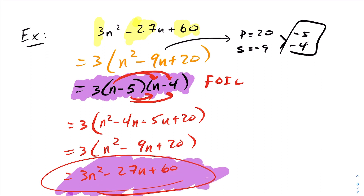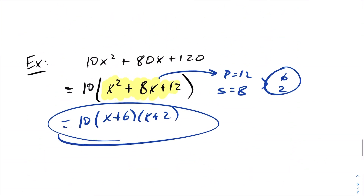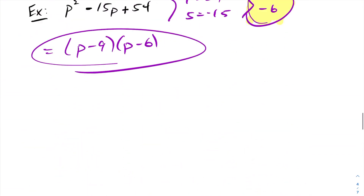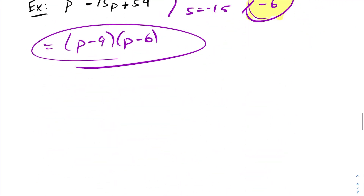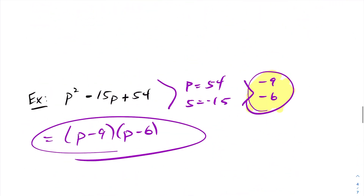This concludes factoring simple trinomials. Feel free to go back, rewatch the video, and try the questions yourself. The basic idea: given a question, look to see if there's a GCF you can factor out first. If not, and the leading coefficient is 1, you do the product-sum method on it.